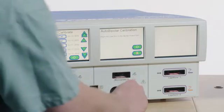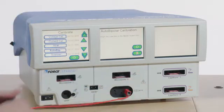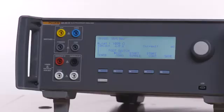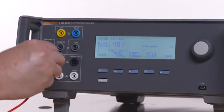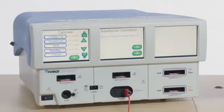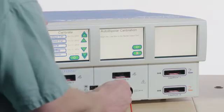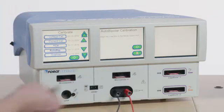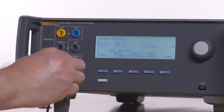Connect a red test lead from either input jack of the Force Triad bipolar port to the variable High on the QAES-3. Connect a black test lead from the other bipolar input jack on the Force Triad to the variable Low on the QAES-3.